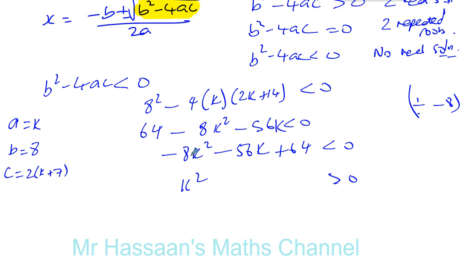So you're going to get k squared, and then plus 7k minus 64. When you divide by minus 8, that becomes positive, that becomes positive, that becomes negative. And that becomes 8, by the way, not 64. 64 divided by 8 is 8. So now we have k squared plus 7k minus 8 is greater than 0.